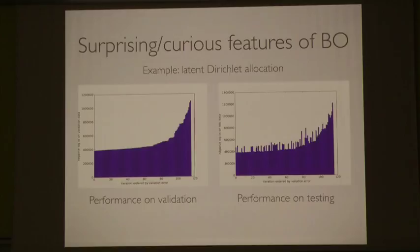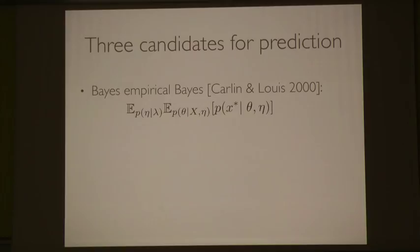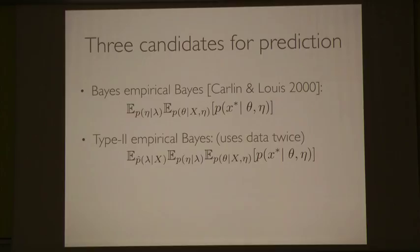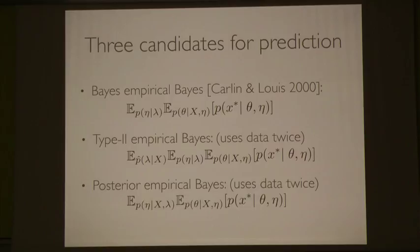Let's consider something that might be even better. Where we have only a few evaluations — say a hundred — we usually like to incorporate some optimization and point estimates because they can have lower variance. We can consider a natural extension to Bayes empirical Bayes where we take a MAP estimate of the hyper-hyperparameter — extending empirical Bayes to another level in the Bayesian hierarchy. This again has the flavor of using the data twice. These are three closely related methods, and they can all be estimated using a method called M3C that I'll talk about next.